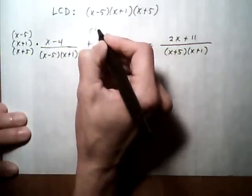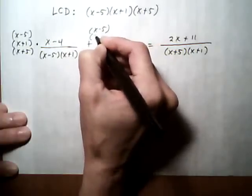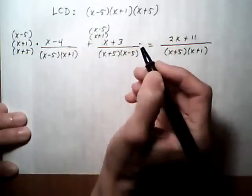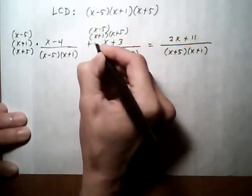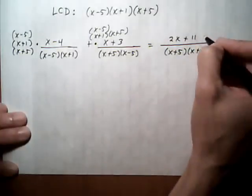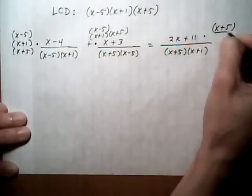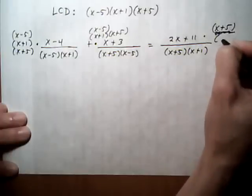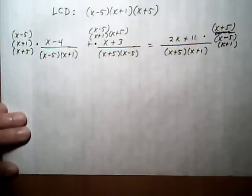And then the second one here also gets multiplied by it. x minus 5, x plus 1, and the x plus 5. So that's multiplying into this fraction. And this fraction is also being multiplied by x plus 5. Oops, not over. x minus 5 and x plus 1.